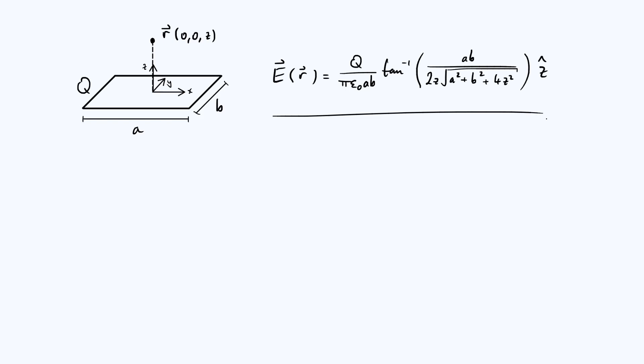As a quick reminder, we were only looking for the electric field at a point such as this R point on the diagram, which is directly above the center of the rectangular sheet, so it's got coordinates 0, 0, z in this Cartesian coordinate system that we've defined.